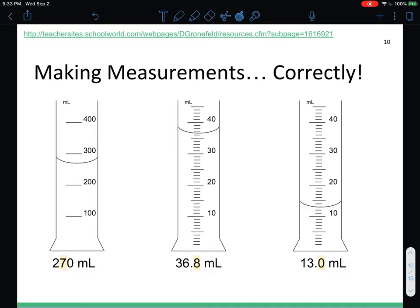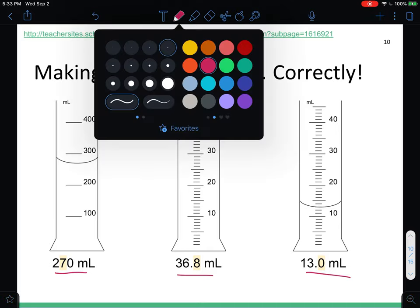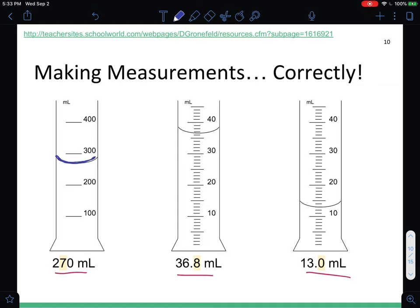Now making measurements that you guys will do in this class. Here are three graduated cylinders and I already have the measurements written out at the bottom and I highlighted the guessing number. So whenever you are reading a measurement, you are going to read everything that you know plus one guess. For this first example, I know that the water level, the meniscus, is above 200 milliliters but it is not at 300 milliliters. Those are actual values that are true and I know that it is guaranteed between there because that is what this measurement tool is telling me.